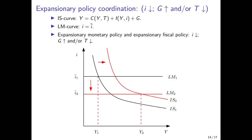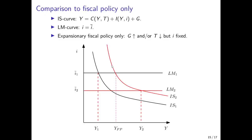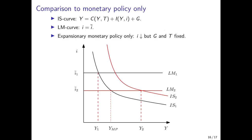Policy coordination has stronger effects than keeping one policy constant. With only fiscal policy and no monetary policy, we would reach an equilibrium at the old interest rate I1-bar and an output level higher than Y1 but much lower than Y2. With only monetary policy and no fiscal policy, we would reach a lower interest rate and output higher than Y1, but again much less than in the case of combining both expansionary fiscal and expansionary monetary policy.